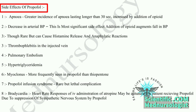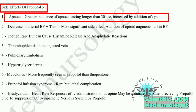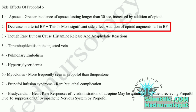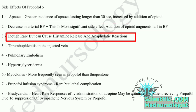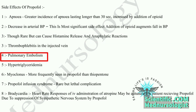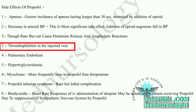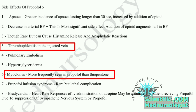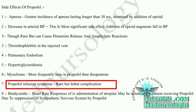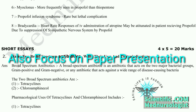Propofol can also produce bronchodilation and decrease the incidence of intraoperative wheezing in patients with asthma. Eighth, decrease in intraocular pressure. Side effects of propofol include: first, apnea; second, decreased blood pressure; third, release of histamine and anaphylactic reactions — rare in most cases; fourth, pulmonary embolism; fifth, thrombophlebitis in the injected vein; sixth, myoclonus; and seventh, propofol infusion syndrome, which is rare but can cause lethal complications.